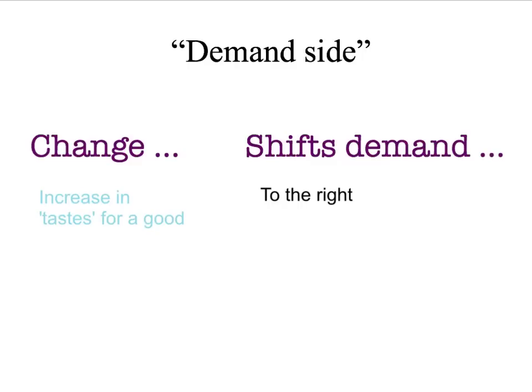Finally, you might have a situation where, for some exogenous reason, there's an increase in people's taste for a particular good. For example, imagine that new medical research shows that eating an apple a day doesn't just keep the doctor away, but also massively reduces your risk of cancer. It wouldn't surprise us if that meant people decided they had an increased desire to buy apples — at any price, consumers wanted to buy more apples than before — in other words, the apple demand curve has shifted to the right.